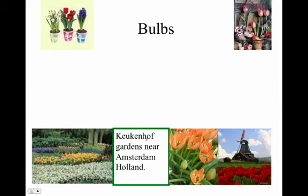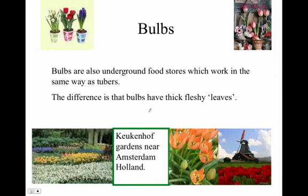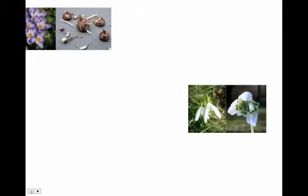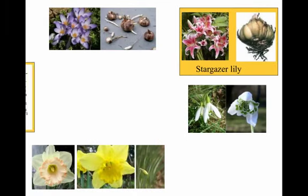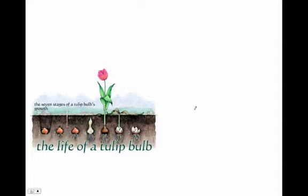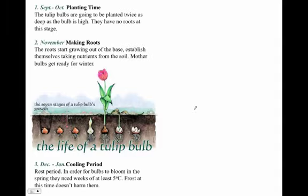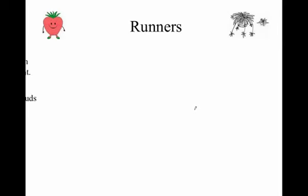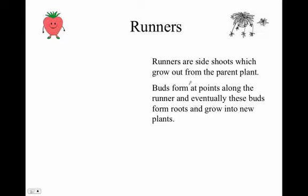Bulbs, like tulips, also have underground food storage which work like tubers. The difference is that bulbs are fleshy leaves. Runners are side shoots which grow from the parent plant — the buds form at points along the way.